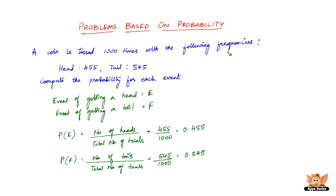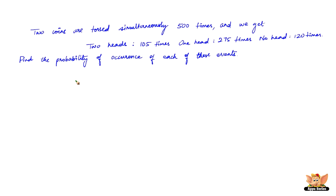Let us solve another problem. Two coins are tossed simultaneously 500 times, and we get 2 heads 105 times, 1 head 275 times, and no head 120 times. Find the probability of occurrence of each of these events. There are three events, so let us name them: E is 2 heads, F is 1 head, and G is no head.